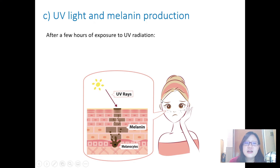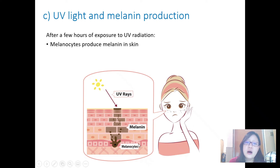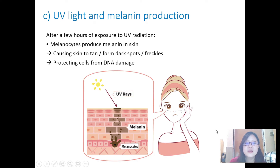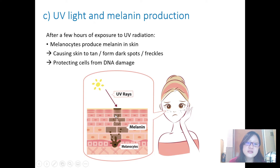After a few hours of exposure to sunlight, you get more tan. After exposure to UV radiation, your melanocytes in your skin layer produce melanin, causing skin to tan, form dark spots, or freckles. This is actually a protective mechanism — your body protecting itself from DNA damage. UV radiation is a mutagen and can mutate DNA, but cells with darker pigmentation can reflect UV rays so they cannot penetrate as deep into the skin.